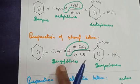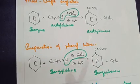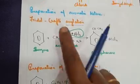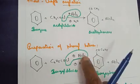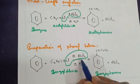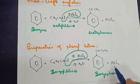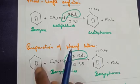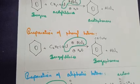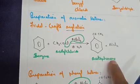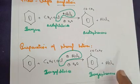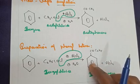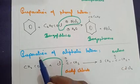The next product is benzophenone. Instead of an alkyl group, we take a phenyl group, so we use benzoyl chloride (C6H5COCl). When benzene is treated with benzoyl chloride in the presence of AlCl3, AlCl3 combines with the Cl and leaves as AlCl4⁻. We are left with C6H5CO⁺, which joins the benzene ring to give benzophenone (C6H5-CO-C6H5). Remember: acetophenone has a CH3 group; benzophenone has two aromatic rings.